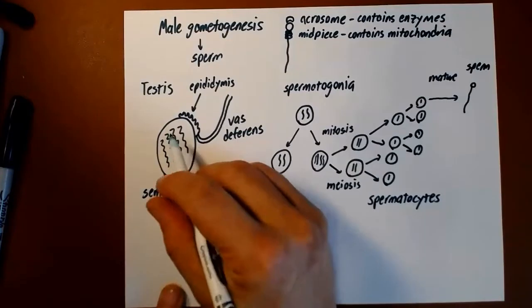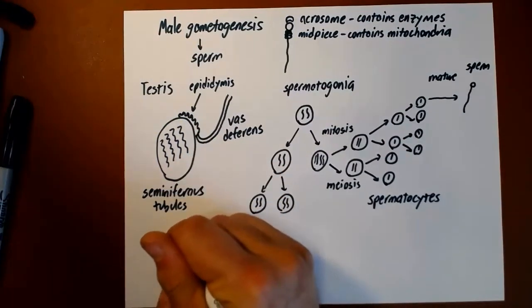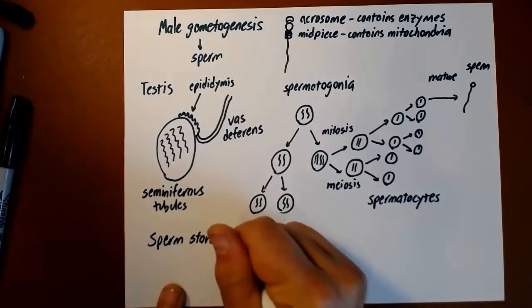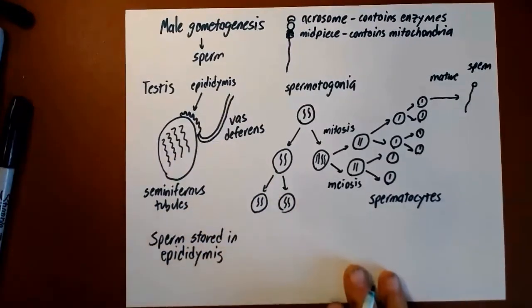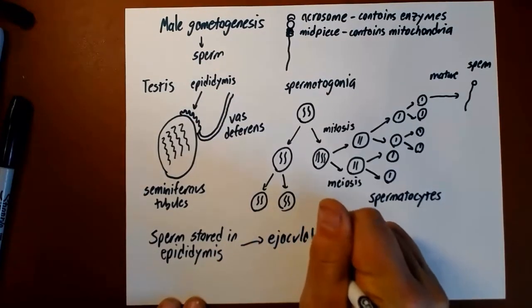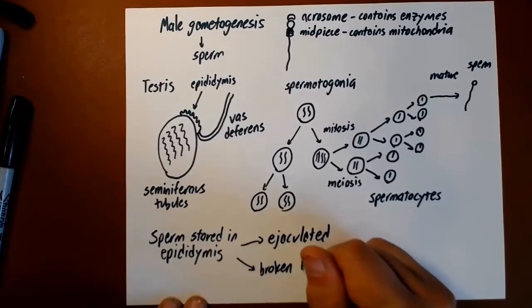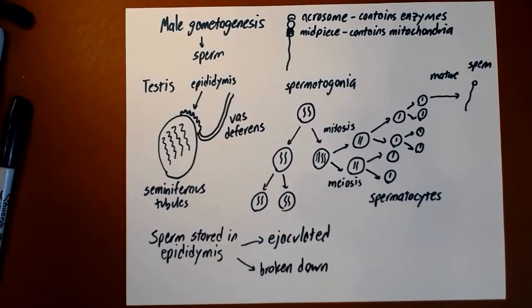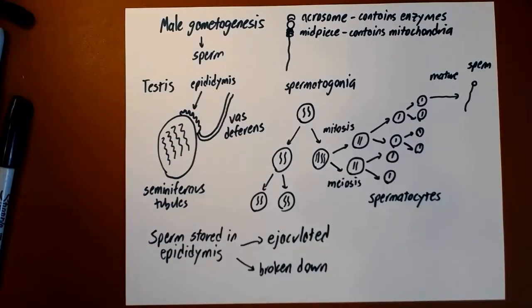The matured sperm are stored in the epididymis. They're stored there until they either are ejaculated or if they don't get ejaculated in a little while they just get broken down and recycled. I have heard men occasionally believe they need to have regular ejaculations or sperm will build up and their testis will explode. That is not how it works. You produce sperm all the time and the ones that are older just get broken down. We just recycle the material.